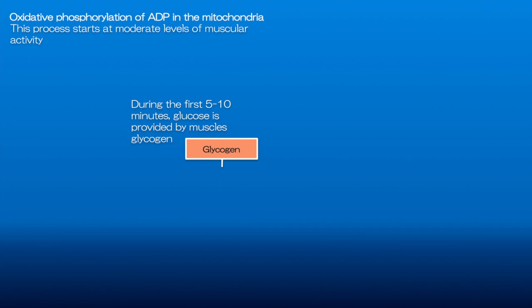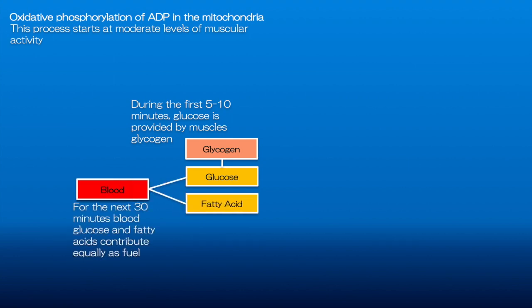During the first five to ten minutes of such exercise, the breakdown of muscle glycogen to glucose provides the major fuel contribution to oxidative phosphorylation. For the next 30 minutes or so, blood-borne fuels become dominant, with blood glucose and fatty acids contributing approximately equally. Beyond this period, fatty acids become progressively more important and muscle glycogen utilization decreases.